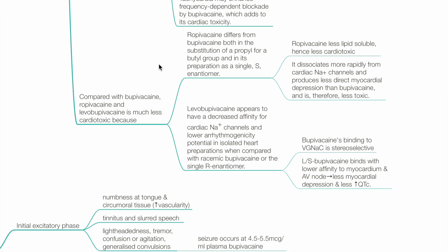Compared with bupivacaine, ropivacaine and levobupivacaine are much less cardiotoxic. Ropivacaine differs from bupivacaine both in substitution of a propyl for a butyl group and in its preparation as a single S-enantiomer. Ropivacaine is less lipid soluble, hence less cardiotoxic, and dissociates more rapidly from cardiac sodium channels than bupivacaine. Levobupivacaine appears to have decreased affinity for cardiac sodium channels and lower arrhythmogenicity compared with racemic or R-bupivacaine, leading to less myocardial depression and less prolonged QTc.